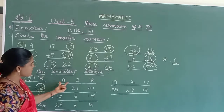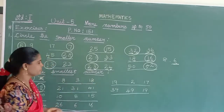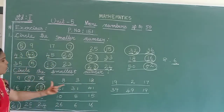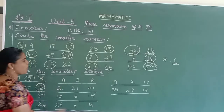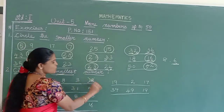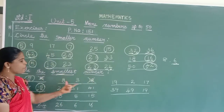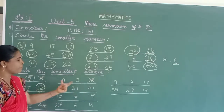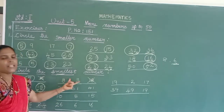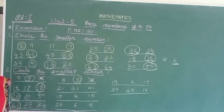Next sum: 8, 3, 18. The same rule applies — the 2-digit number is always bigger than the 1-digit number. We keep the smallest, so disqualify 18. Then compare 8 and 3. 3 is smaller than 8.